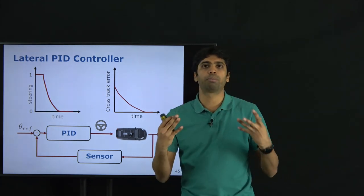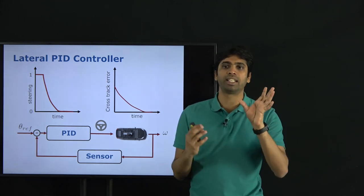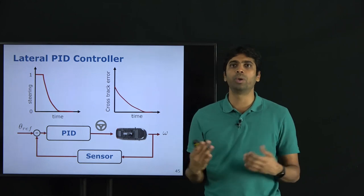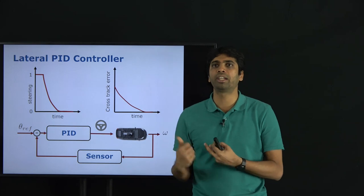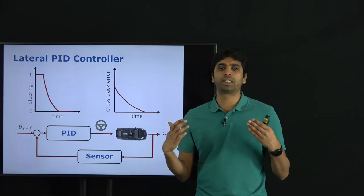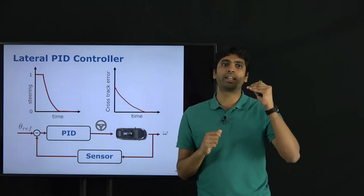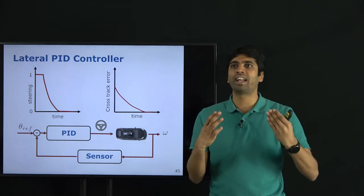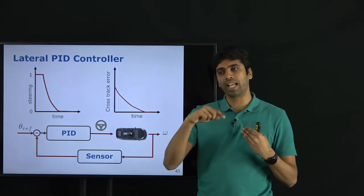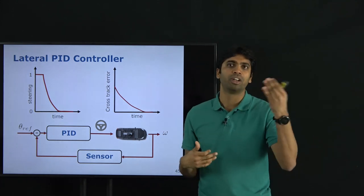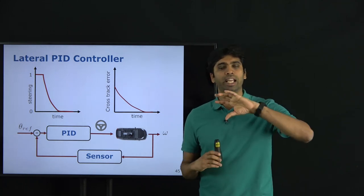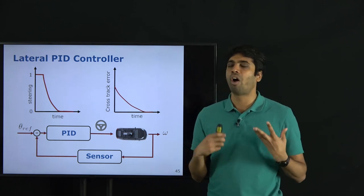In both longitudinal and lateral PID controllers, the velocity and angular velocity control problems are separated and solved independently. This makes controller design easier and gain tuning more manageable. However, there can be competing interests — changing the steering wheel also indirectly affects linear velocity. If gains are properly tuned and the operating range is small enough, this approach works well in practice.